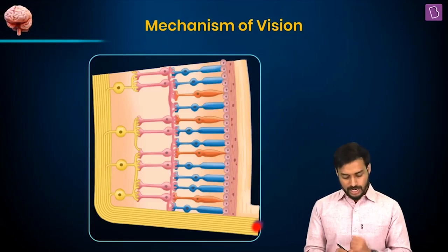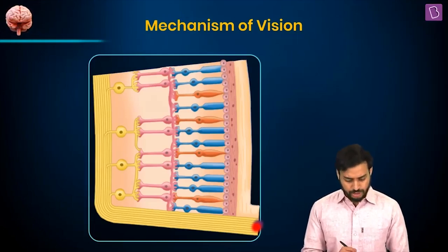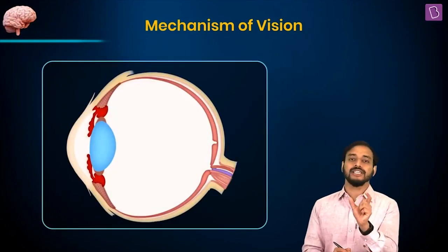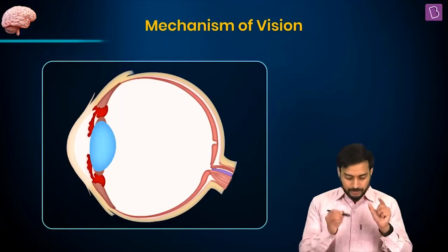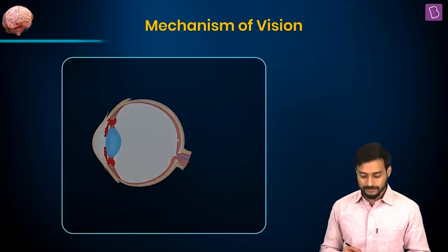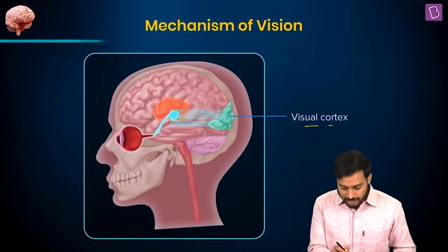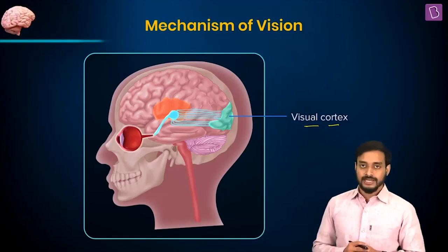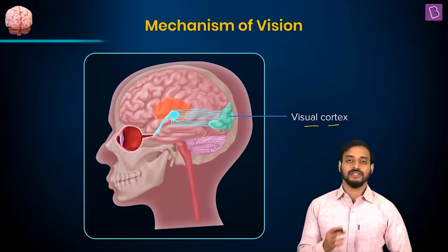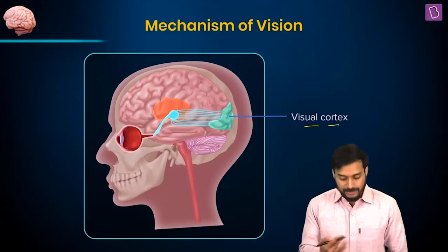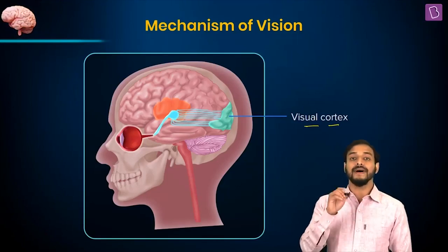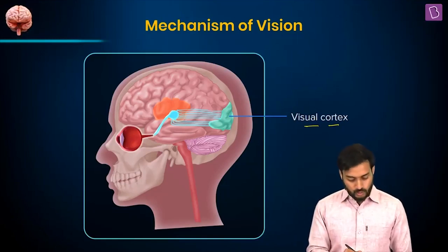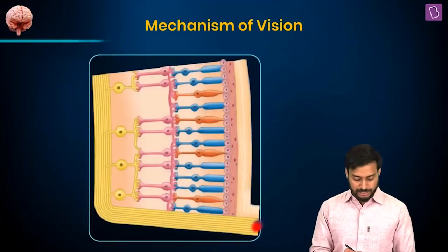This action potential — the impulse — will be transmitted by the optic nerves to the brain, specifically the visual cortex, where the neural impulses are analyzed. The image formed on the retina is interpreted and recognized based on past memory and experience.